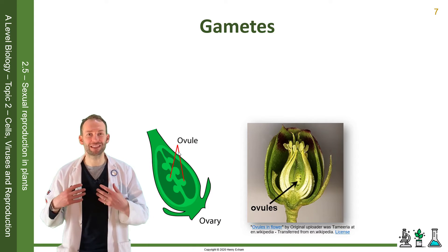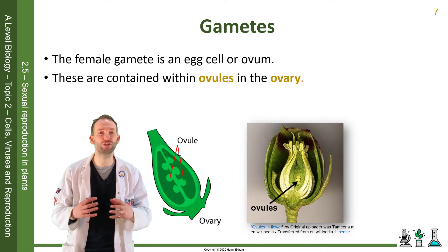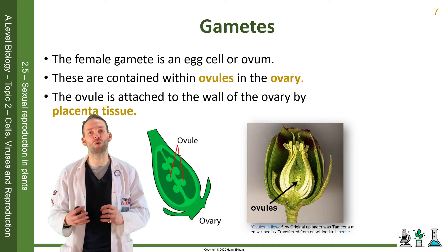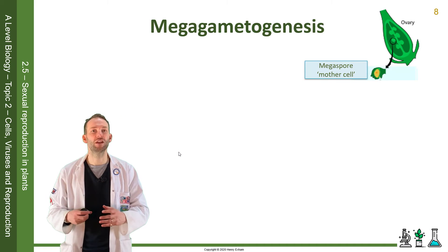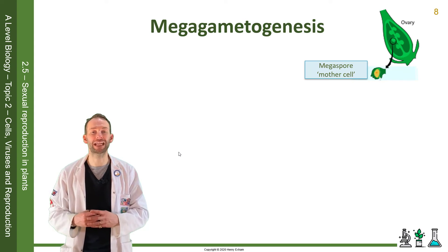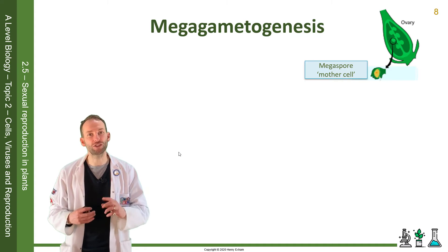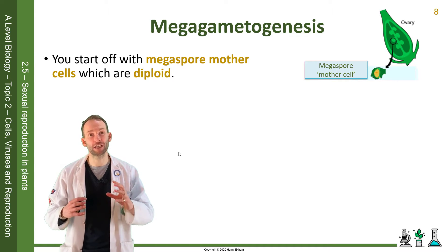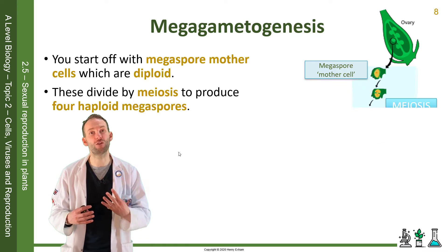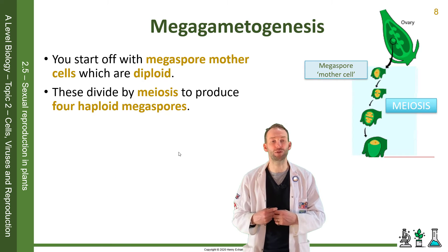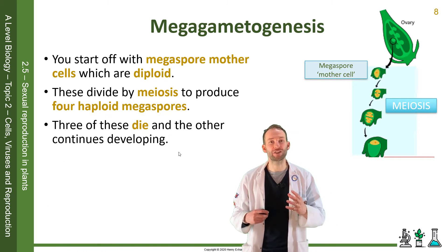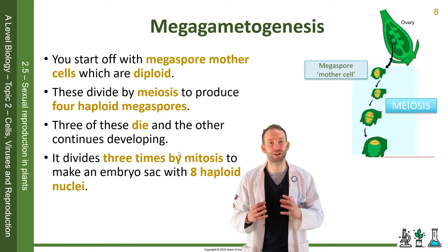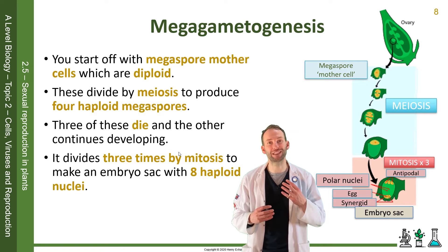The female gamete is an egg cell or ovum, and these are contained within ovules inside an ovary. The ovule is attached to the wall of the ovary by placenta tissue. To learn more about the embryo sac we'll look at megagametogenesis. You start off with megaspore mother cells which are diploid; these divide by meiosis to produce four haploid megaspores. Three of these die and the other continues developing, dividing three times by mitosis to make an embryo sac with eight haploid nuclei.